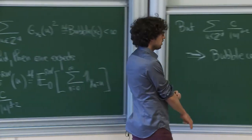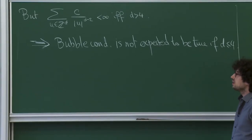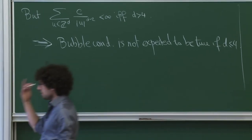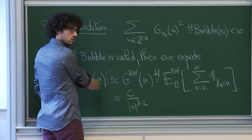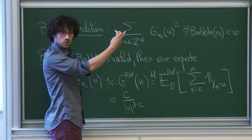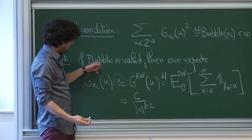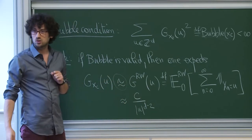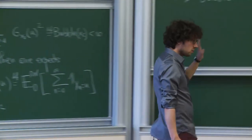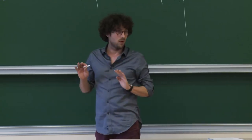Everything I will say when I assume that the bubble diagram is finite is only valid for d larger than 4. And notice on the contrary, if you have that the green function of the self-avoiding walk is smaller than a constant over u to the d minus 2, then you have the bubble condition for d larger than 4. So the second part of the talk will actually be to prove that the green function is bounded by a constant over u to the d minus 2, which will give the converse. But that's not the goal of the first part. The goal of the first part is really to give you one example of application.